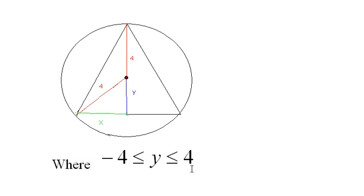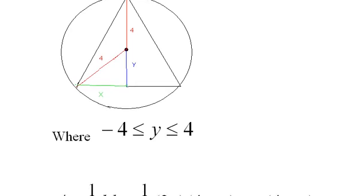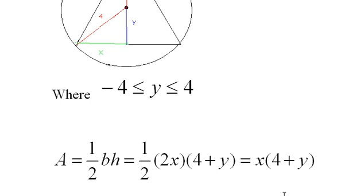We have y is greater than or equal to negative four or less than or equal to four. I think that if y were four we wouldn't have much of a triangle there, probably area of zero, but those are our endpoints.